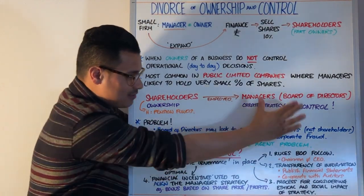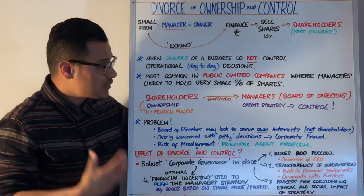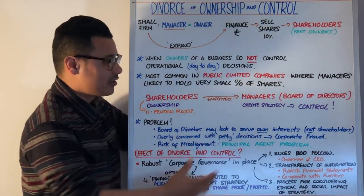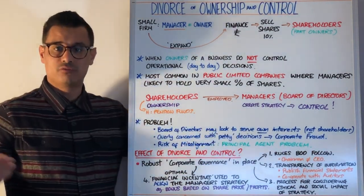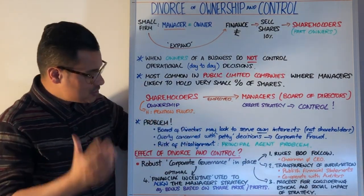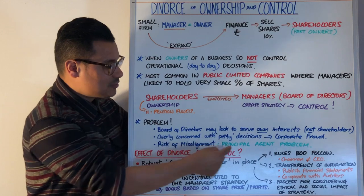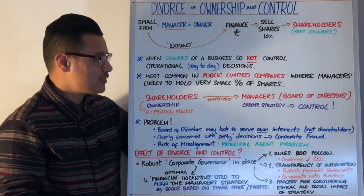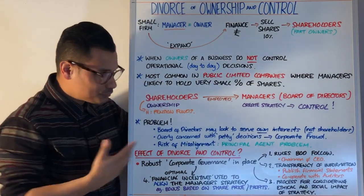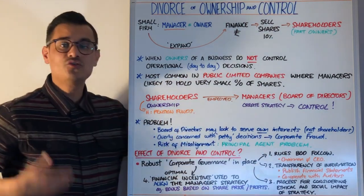The problem with the divorce of ownership and control is that the board of directors may look to serve their own interests rather than the shareholders' interests. In the most extreme scenario, they could commit corporate fraud, which is clearly not in the interests of the owners. This risk is sometimes known as the principal-agent problem: managers have all the control, shareholders have all the ownership but no control, creating a risk of misalignment where managers might do something shareholders do not want.